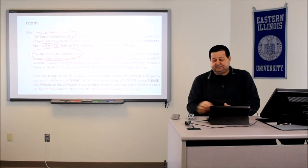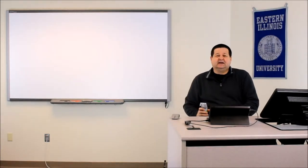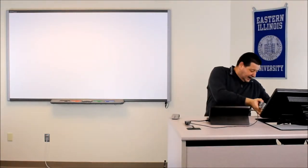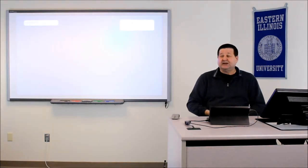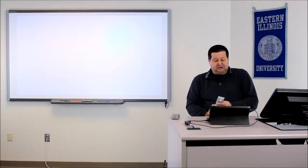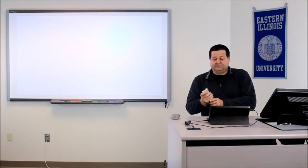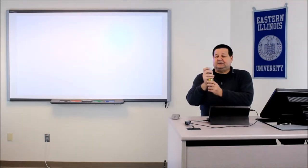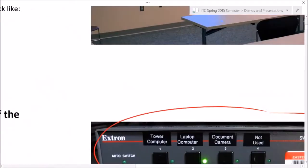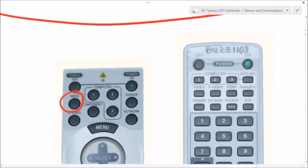The most common problem we get calls about at the ITC: somebody walks into the room, sees the blue screen, looks down and confirms they are on video switch number two on the Extron — the proper switch — but still sees the blue screen. That's possibly because the instructor before them was showing a DVD or VHS movie and changed the video source on the projector to Video. The projector remote needs to be set to Computer 1. The Video button and Computer 1 button switch back and forth between those two video sources, and on the newer style remote it's in the same area.